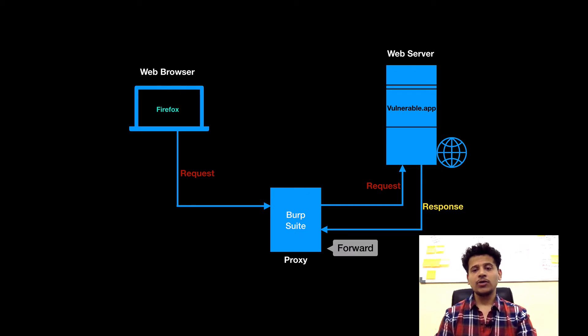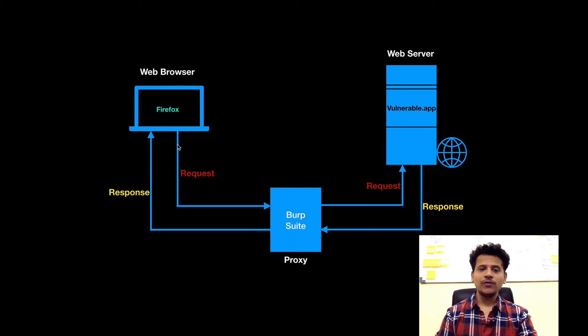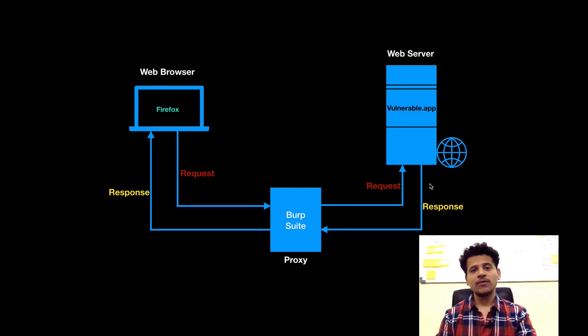Then the web server will send the response, and it will come to the Burp proxy first. After that, when we click on forward, that response will go to the web browser. In the last video we saw the HTTP request headers; now in this video we will see the HTTP response headers coming back from the web server to the web browser.